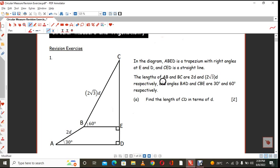The length of AB and BC are 2D as well as 2 root 3 times D respectively. And angles BAD is 30 degrees and angles CBE is 60 degrees. You are now supposed to find the length of CD.